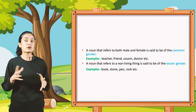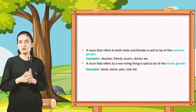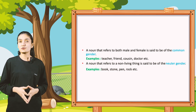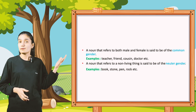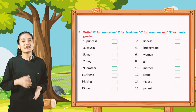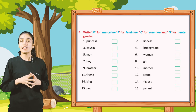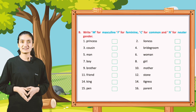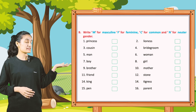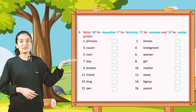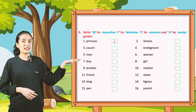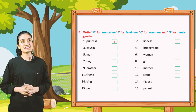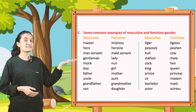A noun that refers to a non-living thing is said to be of neuter gender. Examples: book, stone, pen, rock, etc. Part B: write M for masculine, F for feminine, C for common and N for neuter gender. Princess — it will be F. Lioness — it will be F. In this way, you have to do the list by your own.